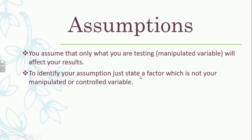To identify an assumption, you state a factor which is not your manipulated or controlled variable — something which is a factor in the experiment that is neither your manipulated variable nor a controlled variable. It's something that you should keep constant but are not using as your manipulated variable. Assumptions are difficult; it's something you have to think through carefully.